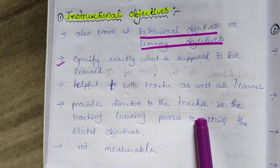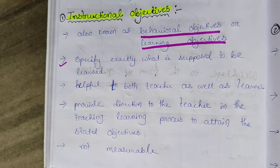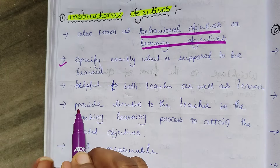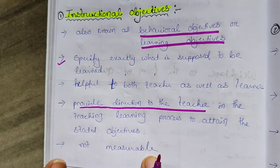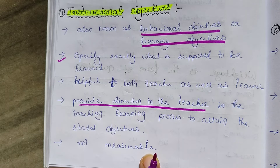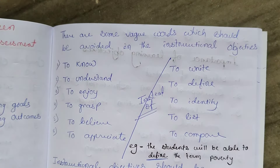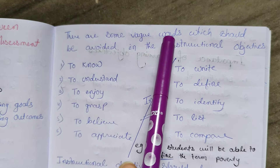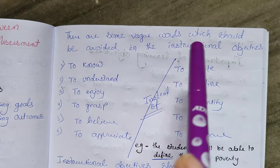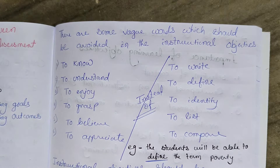Instructional objective provides direction to the teacher. It is not measurable — you cannot measure it, as it is an instruction for the teacher. Some vague words are given in the book that should be avoided in the instructional objective.